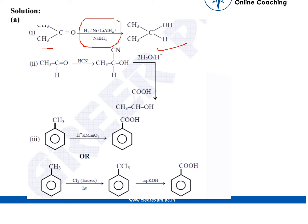(ii) Ethanol to 2-hydroxy propanoic acid can be converted using HCN.